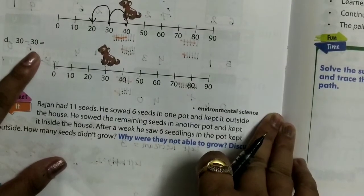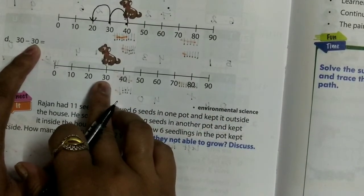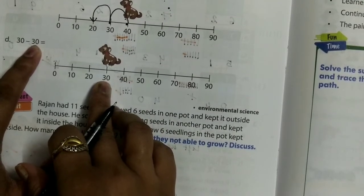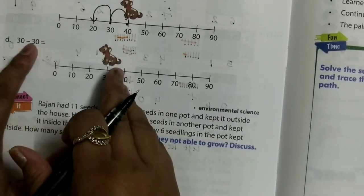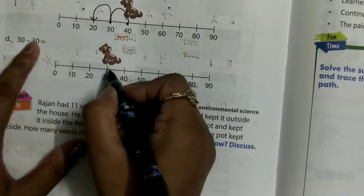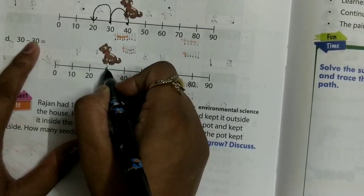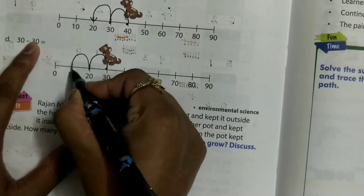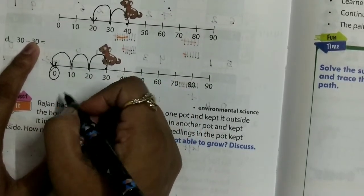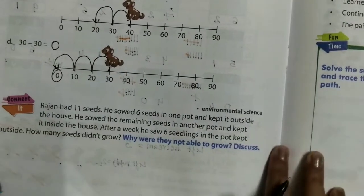30 minus 30 — 1 step equals 10, so 30 means 3 steps. He is at 30, move backward 3 steps: 1, 2, 3. So 30 minus 30 equals 0. In subtraction, we move backward.